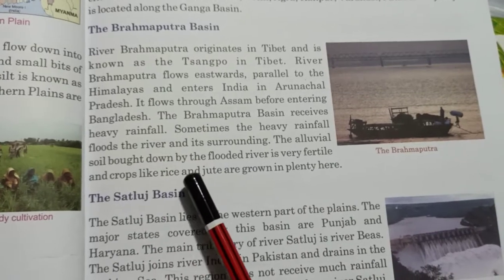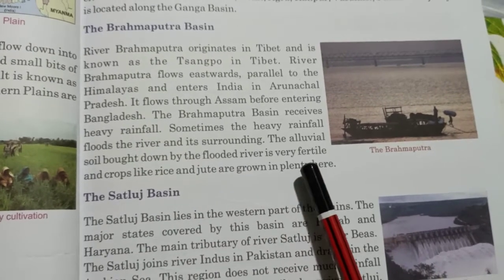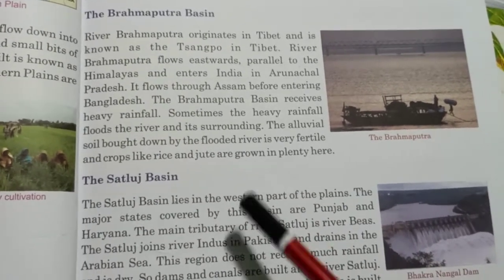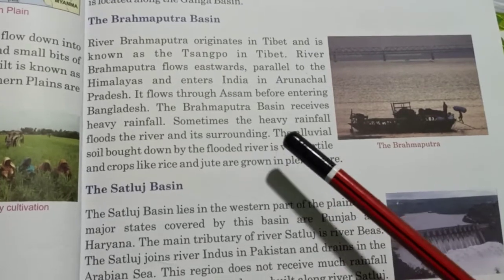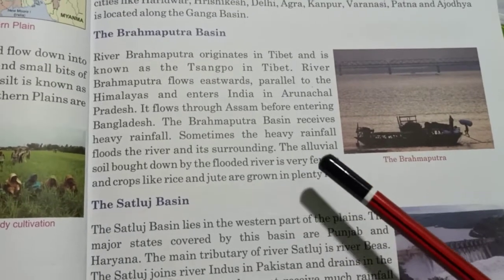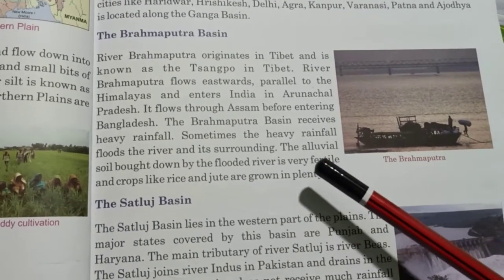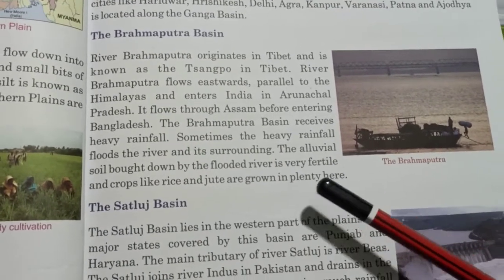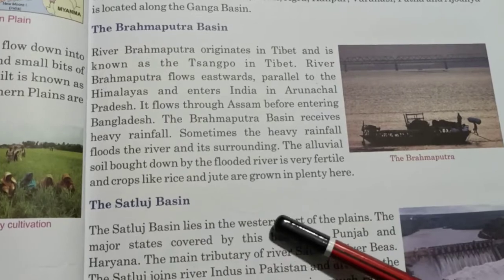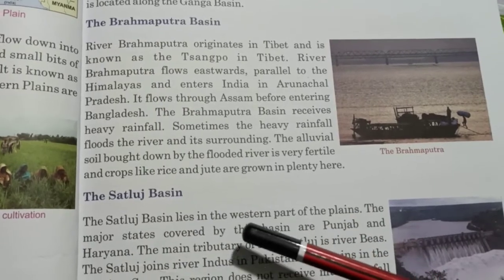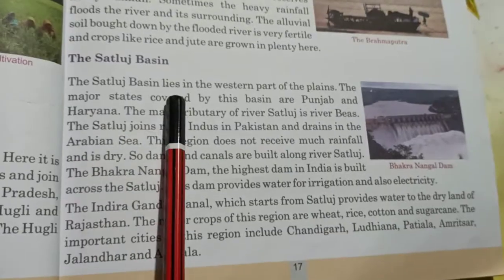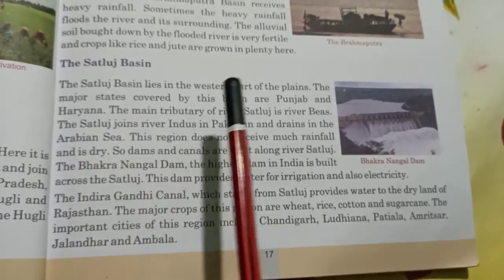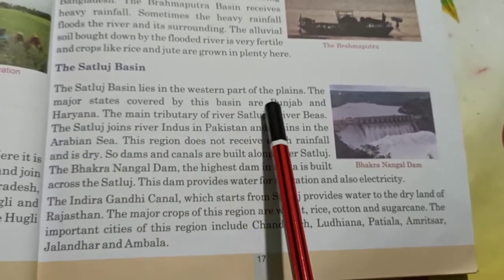The alluvial soil brought down by the flooded river is very fertile, and crops like rice and jute are grown in plenty here.